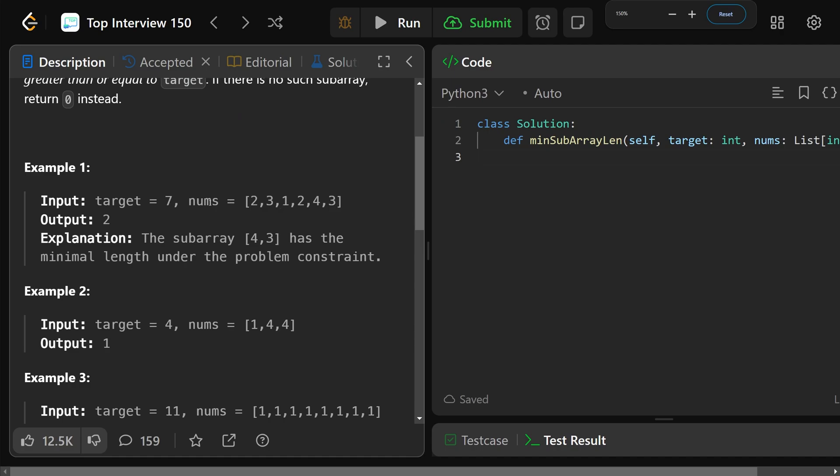So let's look at this first example here. Given the target of 7 and the nums array of 2, 3, 1, 2, 4, 3, well the smallest length subarray that sum is at least the target of 7 is 4, 3. So remember a subarray is any contiguous block of elements. The smallest length subarray where the sum is at least the target would be 4, 3 and the length of that is 2.